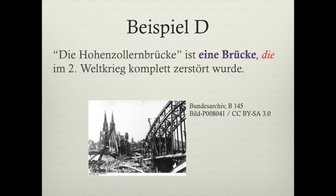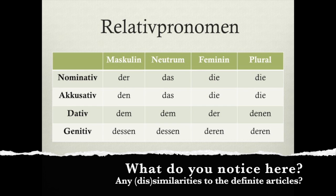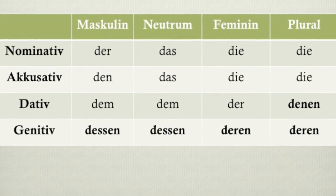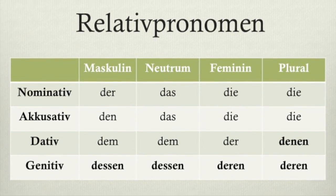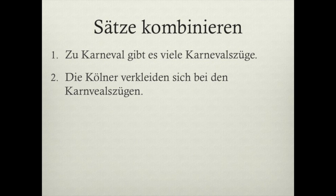The sentence you should have is: 'Die Hohenzollernbrücke ist eine Brücke, die im Zweiten Weltkrieg komplett zerstört wurde.' If you caught some errors, go back and understand where they were — feel free to comment below and ask questions. Now look at this table. You'll notice that the relative pronouns are pretty much the same as the definite articles, except for the dative plural and the genitives — those you need to study as new forms.